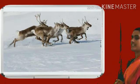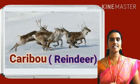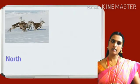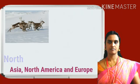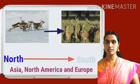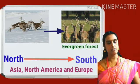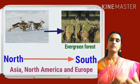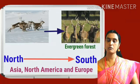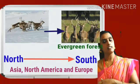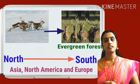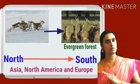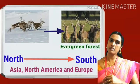What animal is this, children? This is reindeer, or we can call it caribou. These reindeers are found in the northern regions of Asia, North America and Europe. These animals migrate towards the south to the evergreen forest to protect themselves from the cold wind and to find better food.